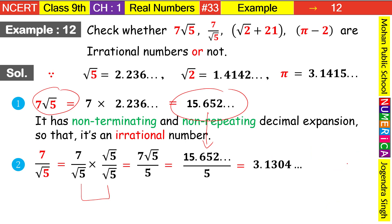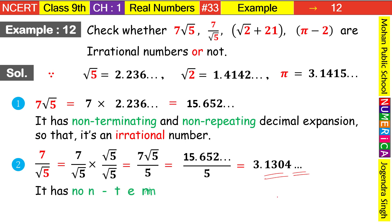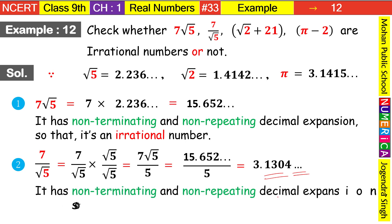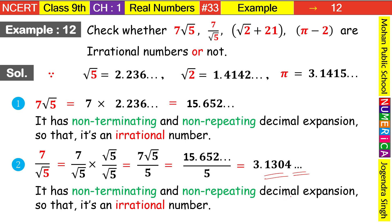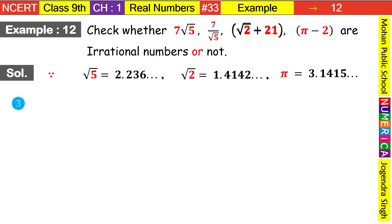The answer is 3.1304... This number is non-terminating and non-repeating, so it has non-terminating and non-repeating decimal expansion, therefore it is an irrational number. So we have completed the first and second questions.